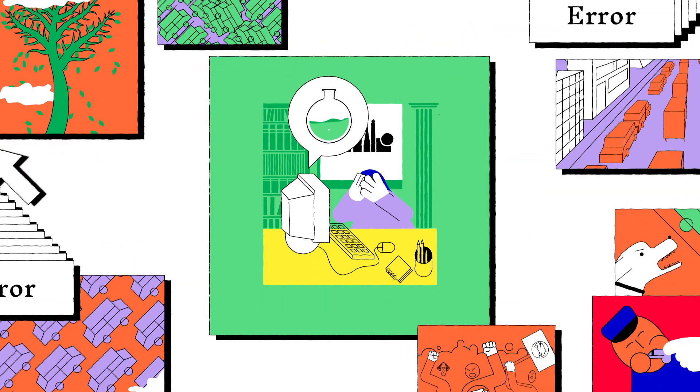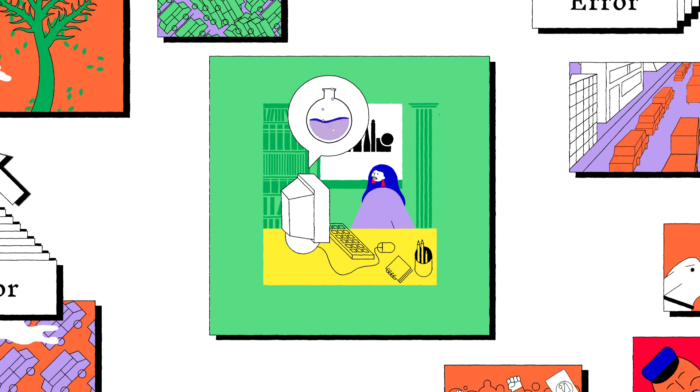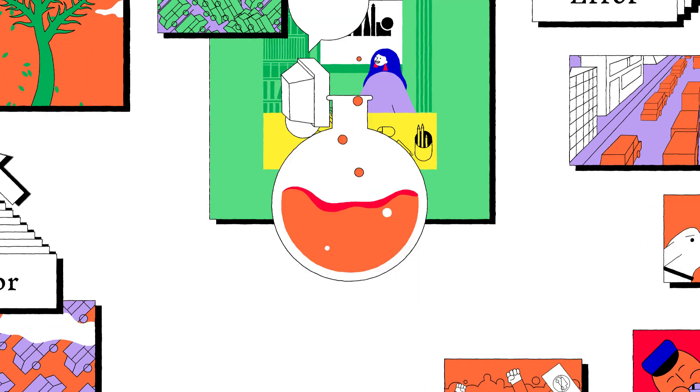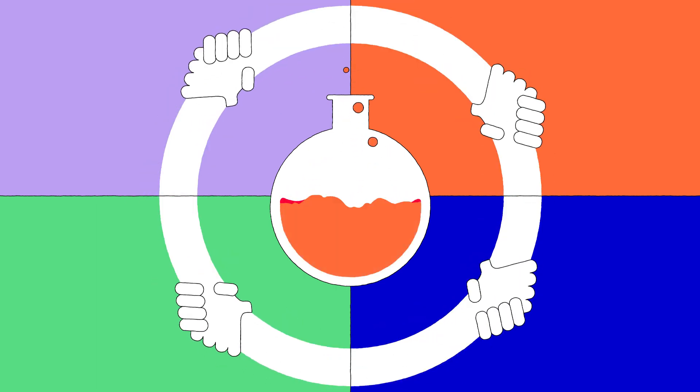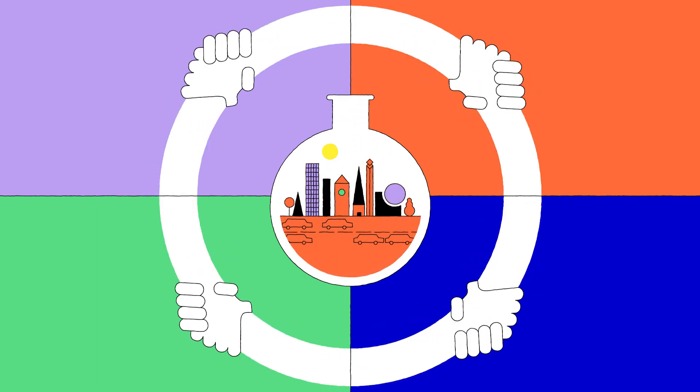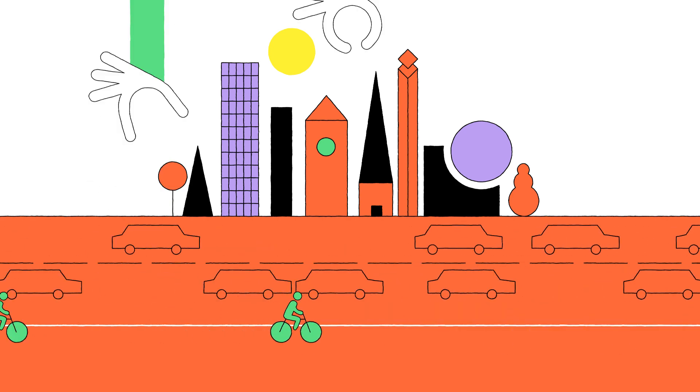She then hears about the Living Lab approach, a new way to address urban problems. Living Labs are spaces where multiple actors work towards a shared understanding of a problem and experiment solutions in a real-life context.